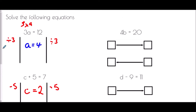An alternative method is the flow chart, which shows what has happened at each stage of the equation and how we get back to the starting point. For 4B equals 20, we always begin with the variable we want to know, which is B. B has been multiplied by 4, so I put that operation on the arrow: B times 4 gives 4B. Since 4B equals 20, working backwards I divide by 4 instead. 20 divided by 4 is 5, so B equals 5.